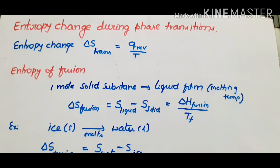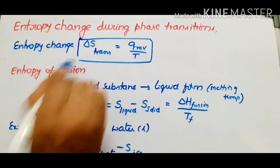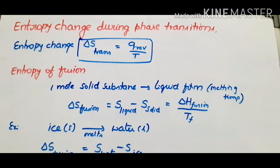Phase transitions or transformations refer to matter changing between its solid, liquid, and gas forms — three forms converting one to another. For example, solid to liquid, liquid to gas, and so on — these are physical phase transfers. There are three types: fusion, vaporization, and sublimation.